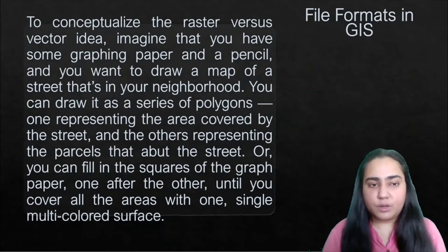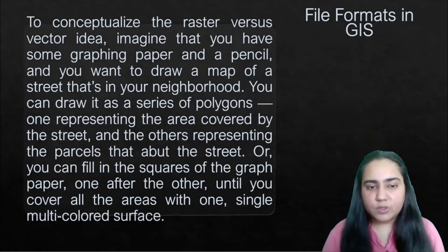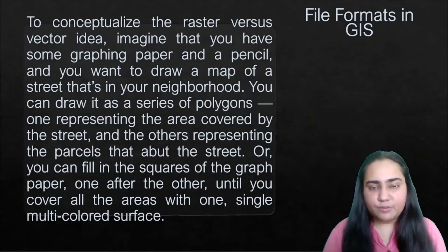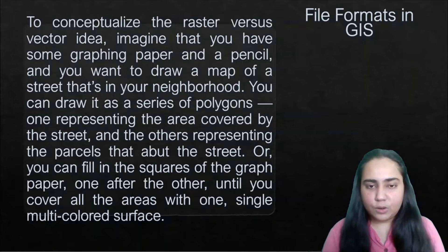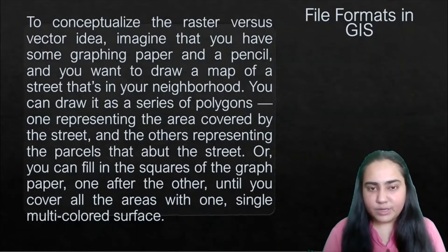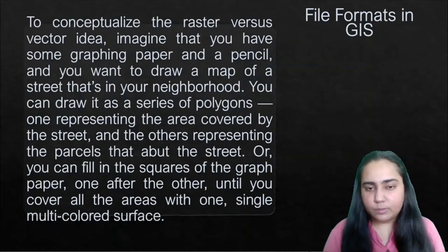You can draw the street as a series of polygons — one representing the area covered by the street, and others representing the parcels adjacent to it. For example, if your street has different blocks of buildings, you would first show the street as a large polygon, then show each block of buildings using smaller polygons within that larger one.